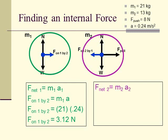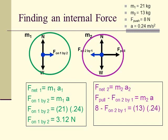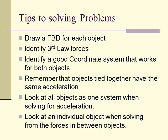If I chose the other object, it doesn't matter. For mass 2, the net force equals mass 2 times acceleration 2. The net force is a little more complicated — it's the pull force minus the force 2 on 1, which gives the same result. So to recap: draw a free-body diagram for each object, identify your third law forces, establish a good coordinate system. Tied objects together have the same acceleration. When solving for acceleration, look at the whole system. When solving for forces between two objects, look at one object at a time. That's pretty much the trick.